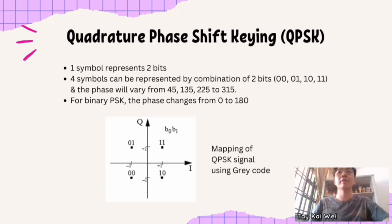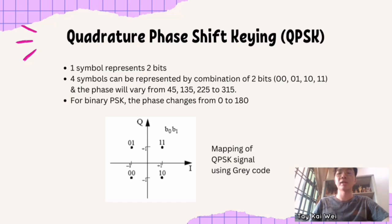In Quadrature Phase Shift Keying (QPSK), one symbol represents 2 bits, and both symbols can be represented by a combination of 2 bits: 00, 01, 10, and 11. The phase varies at 45, 135, 225, and 315 degrees. In contrast, binary PSK only changes phase from 0 to 180 degrees. The figure shows the mapping of the QPSK signal using Gray code: 11 represents 45 degrees, 01 represents 135 degrees, 00 represents 225 degrees, and 10 represents 315 degrees.